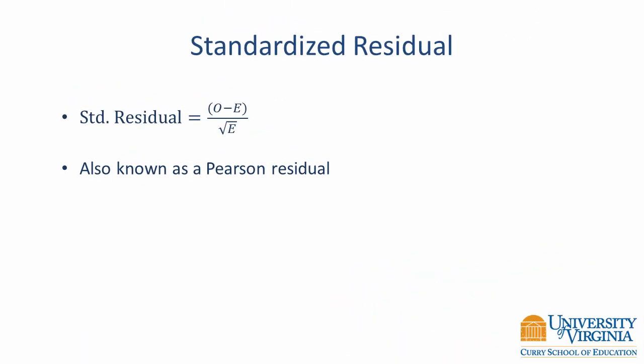Now that we've rejected the null hypothesis, we might want to know where our distribution differs from expectation. We can do that by computing a Pearson standardized residual. This standardized residual is computed by dividing the raw residual by the square root of the expected value. Standardized residuals that are large in absolute value, say two or more, indicate places where our results deviated from expectation.